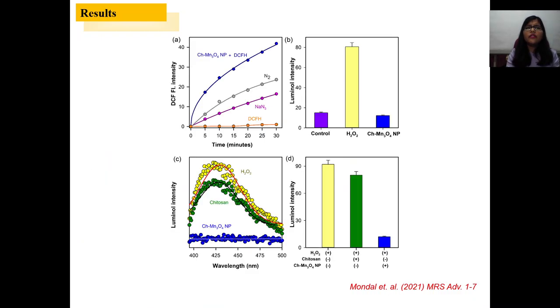Then we have done the ROS study. Here you can see the nanoparticle can introduce dark ROS. And here we have done the anti-radical activity test: luminol and H2O2 gives chemiluminescence, but when we add our nanoparticle with H2O2 and give luminol, it scavenges the H2O2 which is a type of ROS, so the luminescence is not there. So our nanoparticle can generate ROS and can scavenge ROS.